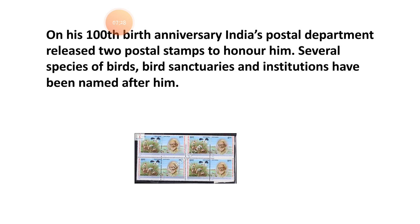At age 10, Salim shot a bird with his toy gun. Unable to identify it, he was introduced to the secretary of the Bombay Natural History Society. One of his childhood playmates included his distant cousin Mirza, who later became the first president of Pakistan. They often participated in shooting contests in their neighborhood.